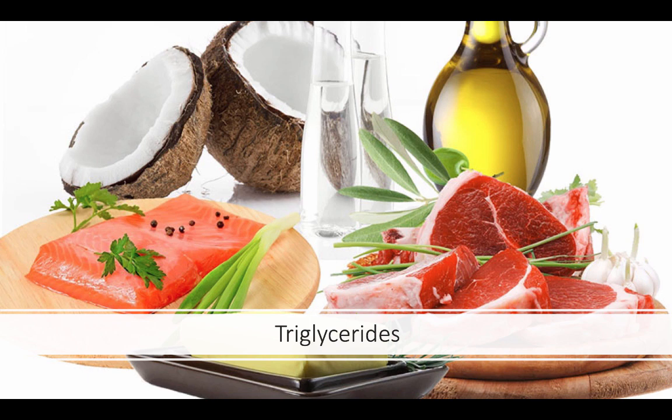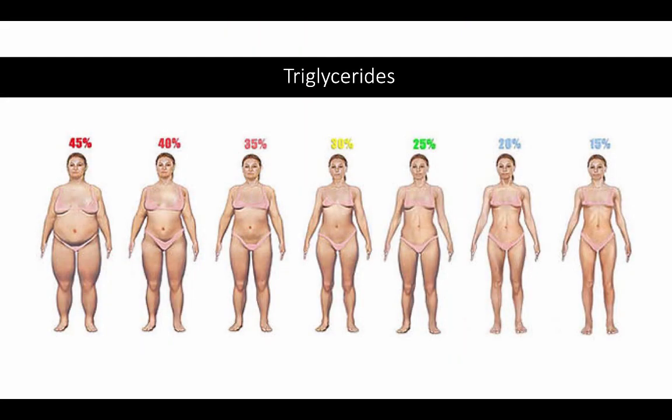First is the triglycerides, which includes our fats and oils used for energy storage in fat tissue, also known as adipose tissue. Fat is the second most important form of energy to humans, next to carbohydrates.